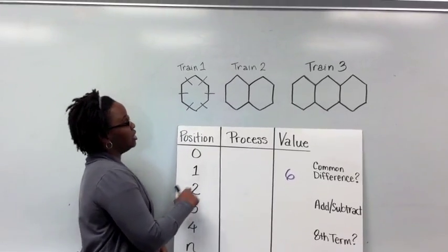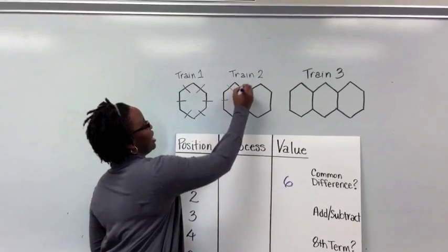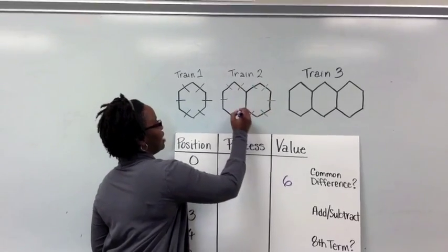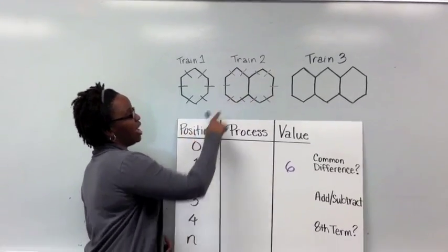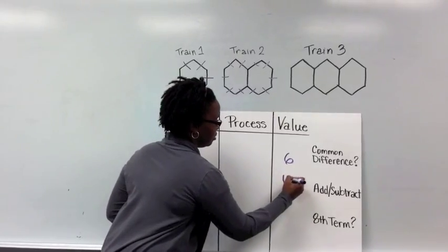I'm going to go on to train 2, and if I count each one of the sides, the outside for the perimeter of this train, I would have a perimeter of 10.